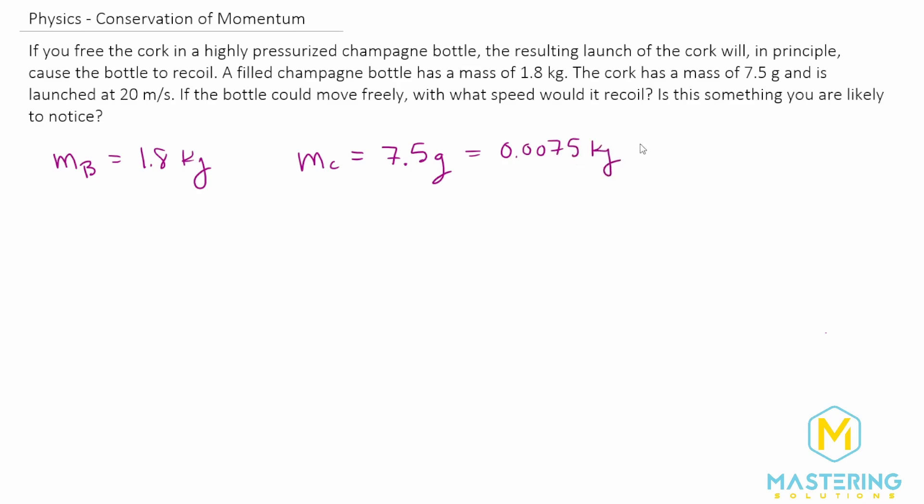That can also be written in scientific notation as 7.5 times 10 to the negative 3 kilograms. And they tell us the final velocity of the cork after it is popped is 20 meters per second.